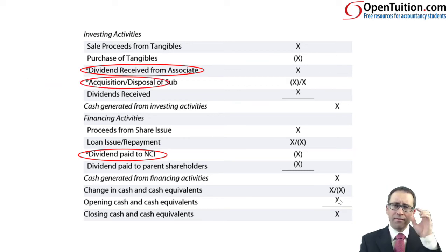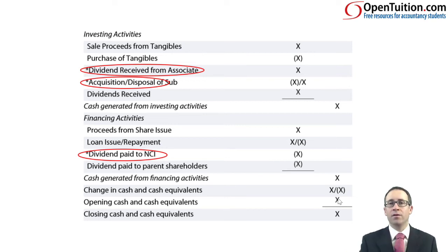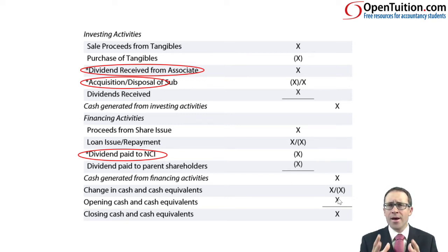Then you have the acquisition or the disposal of a subsidiary. If you have the acquisition of a subsidiary, you have paid to bring it into your group — so there's a big cash outflow. If you've disposed of a subsidiary and got rid of it, there's going to be a cash inflow as you get the sales proceeds on disposal.